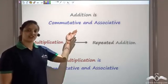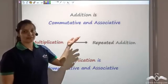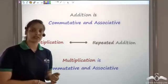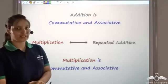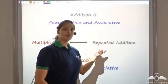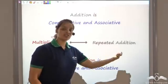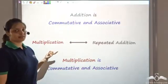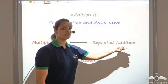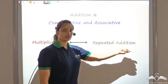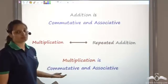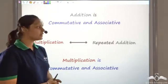We had seen that addition is commutative and associative, while subtraction is neither commutative nor associative. From addition, if I do repeated addition, I get multiplication. And as addition was both associative and commutative, multiplication too is both commutative and associative.